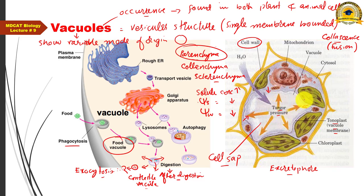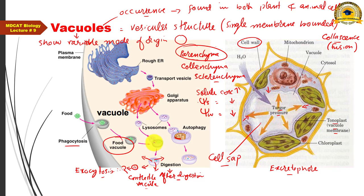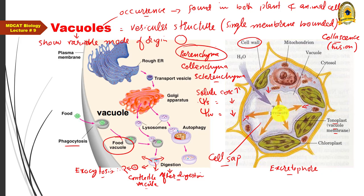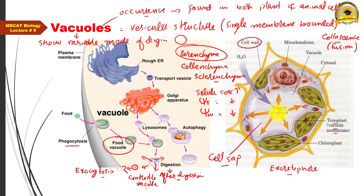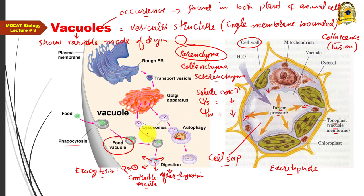Additionally, the plant cell vacuole contains hydrolytic enzymes and performs the role of a lysosome — the lysosomal role in plant cells is carried out by the vacuole, unlike animal cells which have typical lysosomes. So the plant cell vacuole performs multiple roles: turgor development, mechanical support, storehouse function, and intracellular digestion.